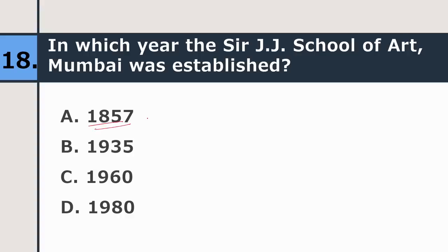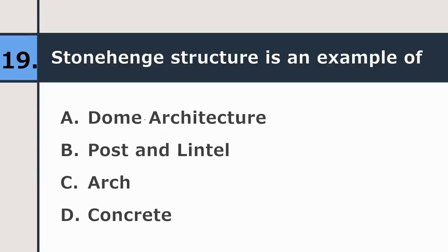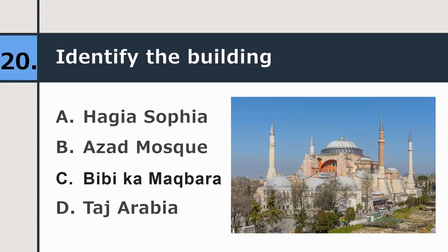Nineteenth question: the Stonehenge structure is an example of dome architecture, post and lintel, arch, or concrete? The correct answer is post and lintel. Twentieth question: identify the building — Hagia Sofia, Azad Mosque, Bibi Ka Maqbara, or Taj Arabia? The correct answer is Hagia Sofia.